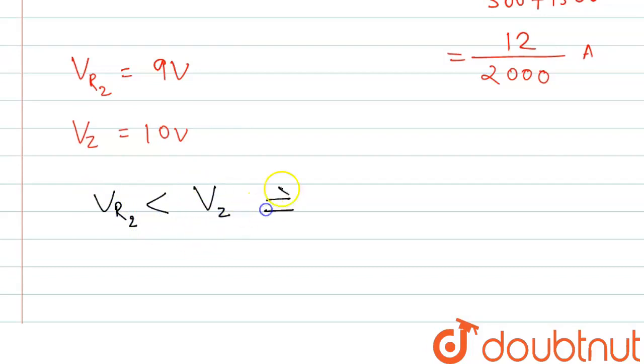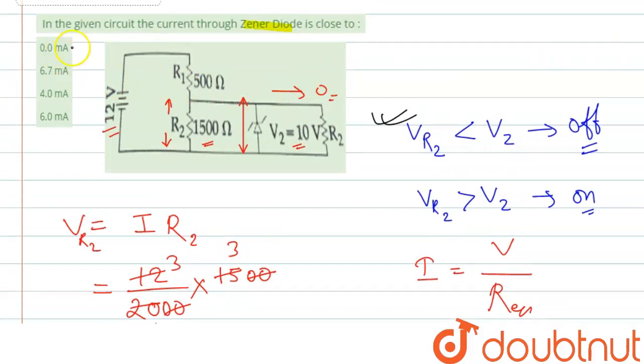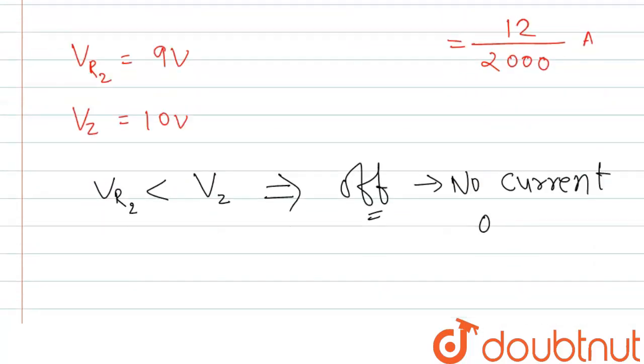So the Zener diode is off in off condition, and if the condition will be off, then no current will pass, no current. So it will be 0 mA or ampere. So if we check the option, it is in milliampere, so we can write 0.0 mA.